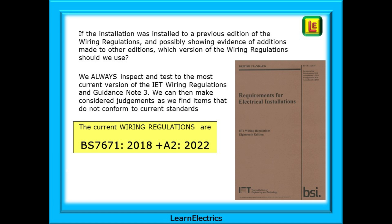One question that often pops up goes like this: if the installation was installed to a previous edition of the wiring regulations, and possibly showing evidence of additions, which version of the wiring regulations should we use? We — that's you and I, and any inspector — should always inspect and test to the most current version of the IET wiring regulations and Guidance Note 3. We can then make considered judgements as we find items that do not conform to current standards. The current wiring regulations are BS 7671 2018, Amendment 2 2022.